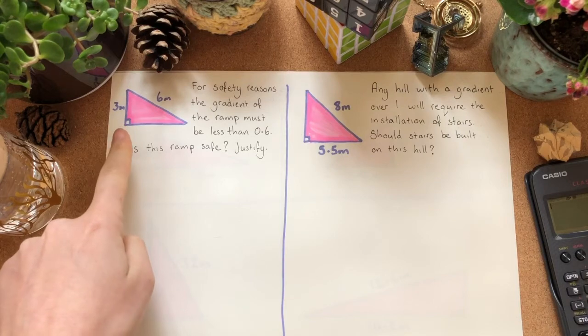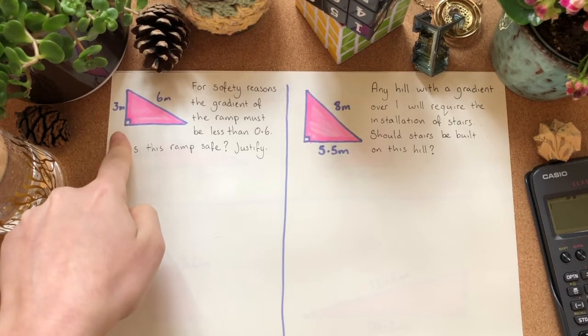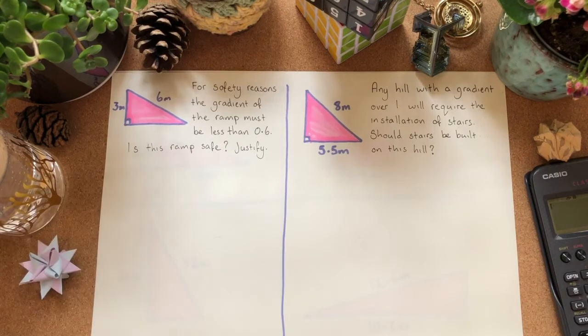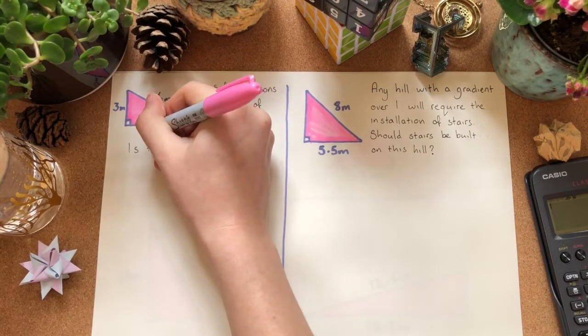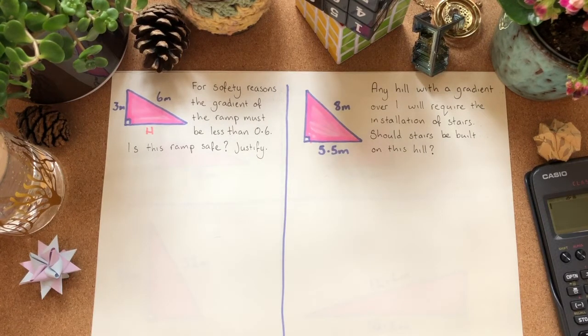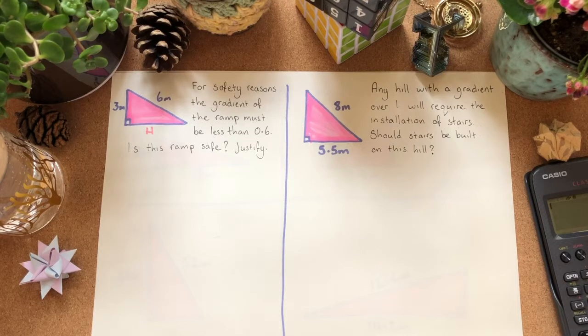First of all, do we have what we need to work out the gradient? We've got a vertical height. Oh no, we do not have a horizontal length. So, we need to work out this h here before we can start doing the gradient. And the way that we're going to do that is we're going to start with Pythagoras. Then we need to think to ourselves, is this a short side or is it a long side that we're looking for?